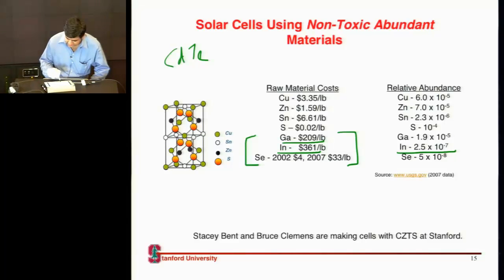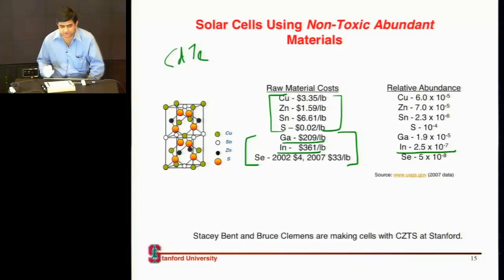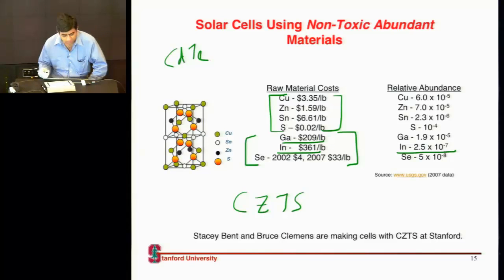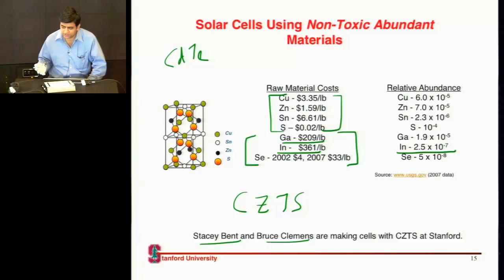Nonetheless, the argument is: let's get rid of indium and form a cell with more abundant elements. Copper is more abundant; zinc — you use pans made of copper and zinc; tin is well abundant — you use it for soldering; sulfur is well abundant. So this new technology called CZTS uses these four more abundant elements. There are a few groups at Stanford working on these. It's a close cousin of CIGS, but you get rid of indium and gallium, which are rare.